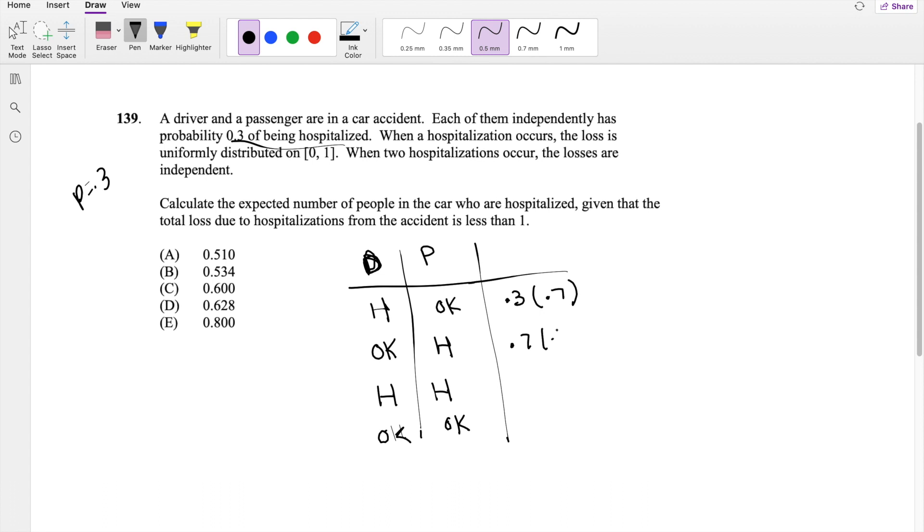Otherwise, this one's going to be the opposite. If both of them are hospitalized, this is going to be 0.3 times 0.3. And if both of them are okay, it's just going to be 0.7 times 0.7. But the little key thing is here,